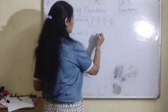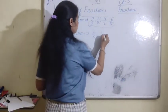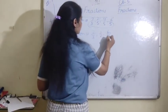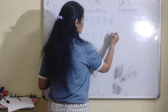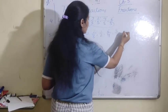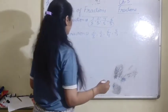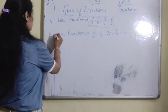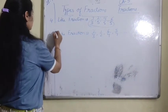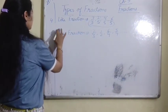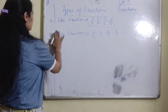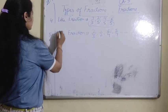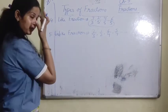Unlike fractions are those in which the denominators are different. For example, 2 upon 3, 1 upon 2, 6 upon 4, 5 upon 7 — the denominators are all different, so these are unlike fractions.